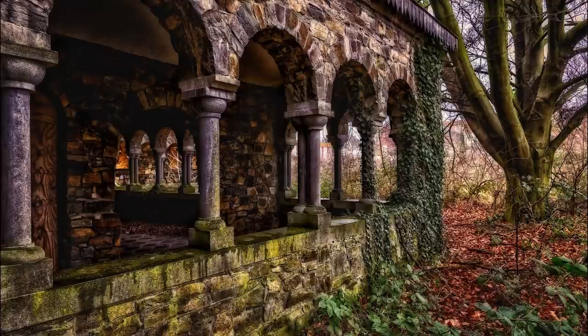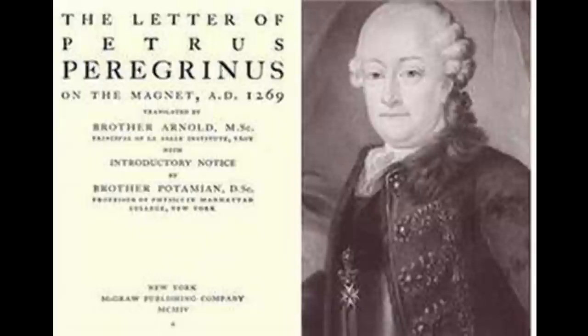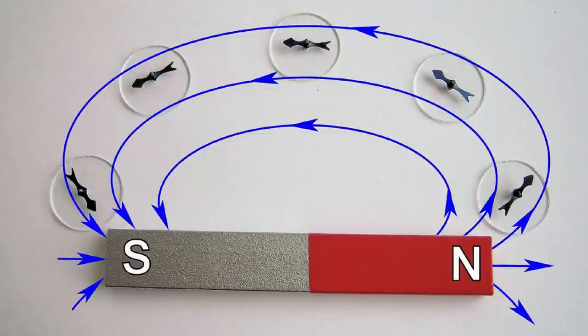In the 13th century, Pierre de Maricourt made a discovery of fundamental importance. He used a natural magnet which had a rounded shape and laid on it a needle and marked the line along which the needle set itself. He then proceeded to move the needle onto other parts of the stone and continued to mark the directions it pointed.